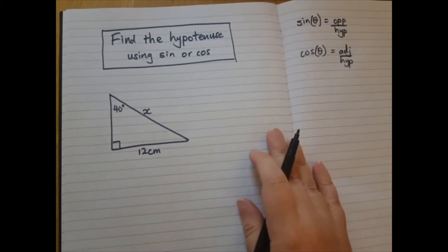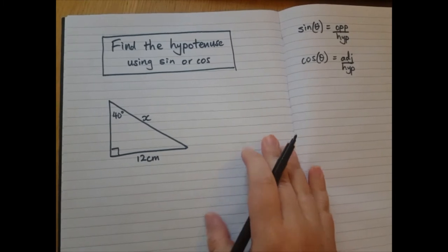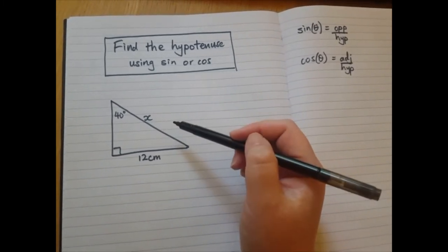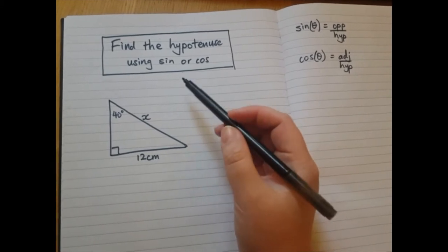Hi, everyone. In today's video, we're going to work out the length of the hypotenuse in this triangle, and we're going to use sin or cos.